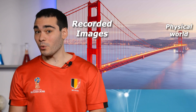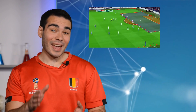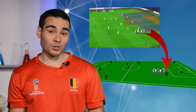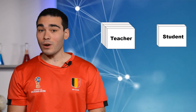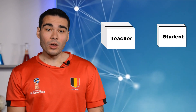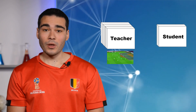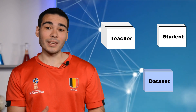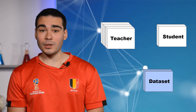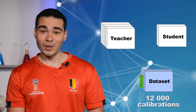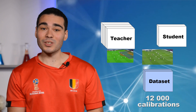Camera calibration serves as a bridge between the images recorded and the physical world. It allows projecting any point located on the field of the frame to its real-world coordinates on the actual soccer field. To develop our calibration algorithm, we propose a teacher-student distillation approach. As teacher, we choose a calibration tool from a private company to generate a dataset of 12,000 surrogate ground truth calibrations on the SoccerNet dataset.